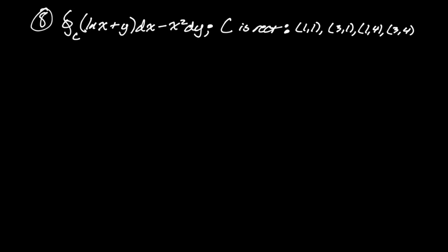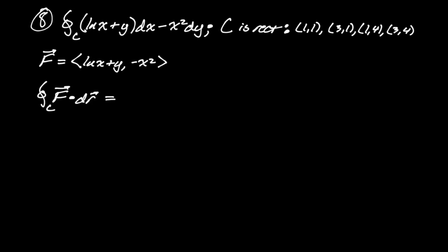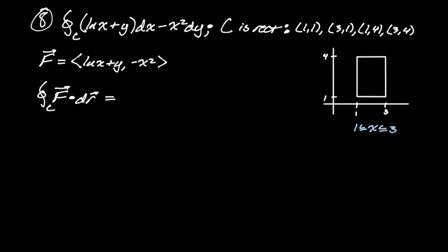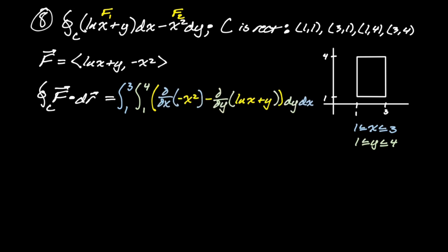Number eight: the line integral of ln(x + y) dx − x² dy. Our path is the rectangle bounded by x ∈ [1, 3] and y ∈ [1, 4]. We're going counterclockwise by default. Identifying F1 = ln(x + y) and F2 = −x², the integrand is the partial of F2 with respect to x, minus the partial of F1 with respect to y — so it's partial x of (−x²) minus partial y of ln(x + y). Keep in mind the form is F1 dx + F2 dy.